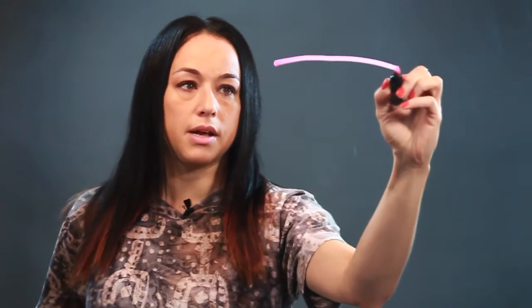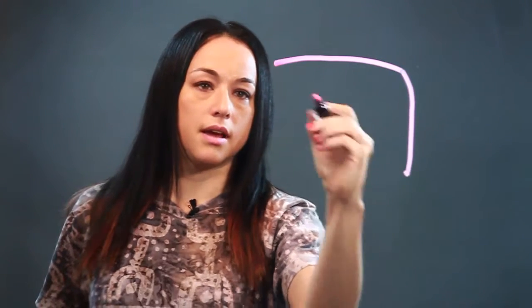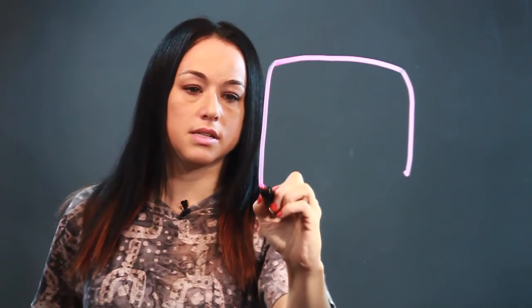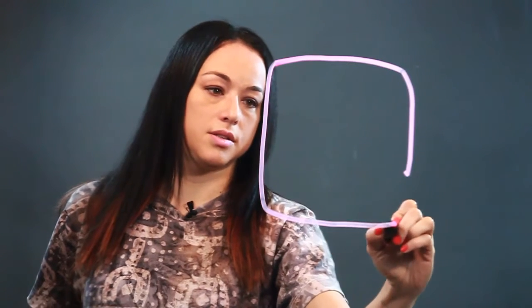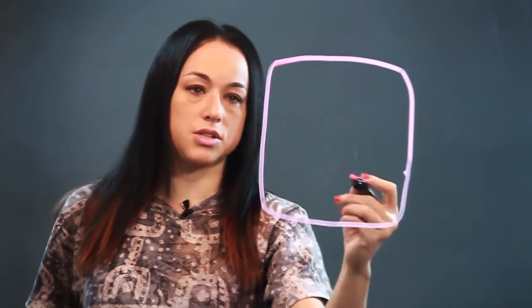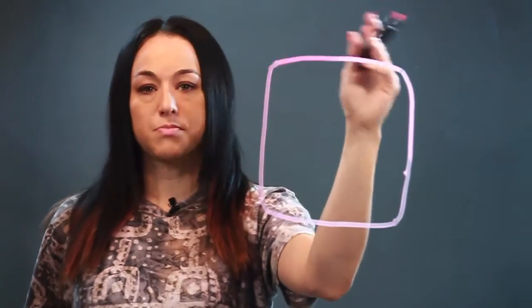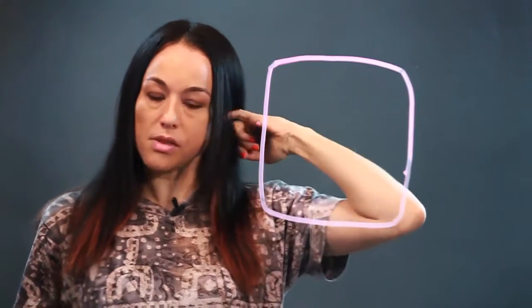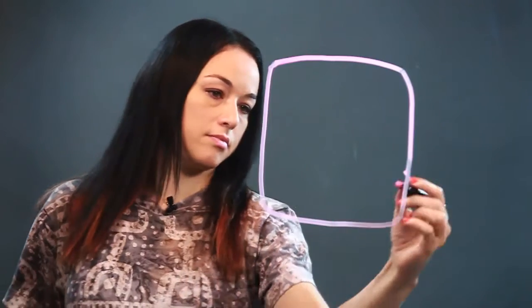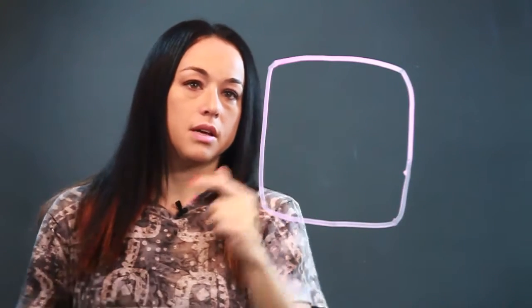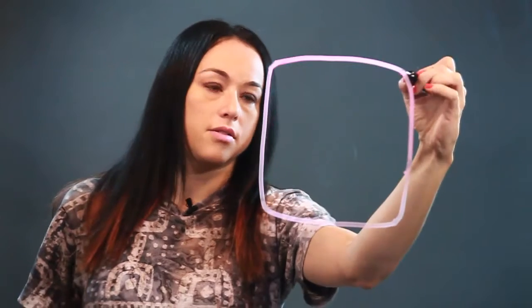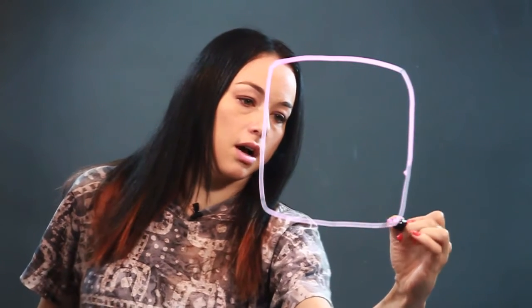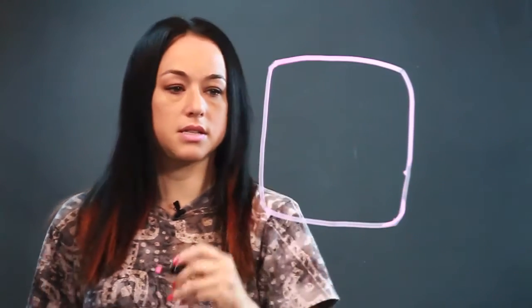I'm going to start with the cell wall of the plant cell. It's like cellulose, and that's what gives the cell its shape. I'm drawing it kind of square because plant cells pack together to make the structure of the plant. They pack together and are kind of square a lot of the time, to give the plant its rigid structure. So, that's the cell wall.